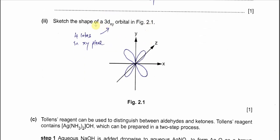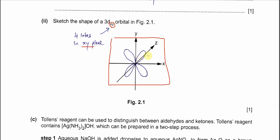Part 2: sketch the shape of the 3d xy orbital. Most 3d orbitals have four lobes, except the dz² orbital. Because it says xy, the four lobes must lie in the xy plane and between the xy axes — not along them, as would be the case for dx²-y². So in the xy plane, the four lobes are positioned between the x and y axes. Draw four lobes like this.